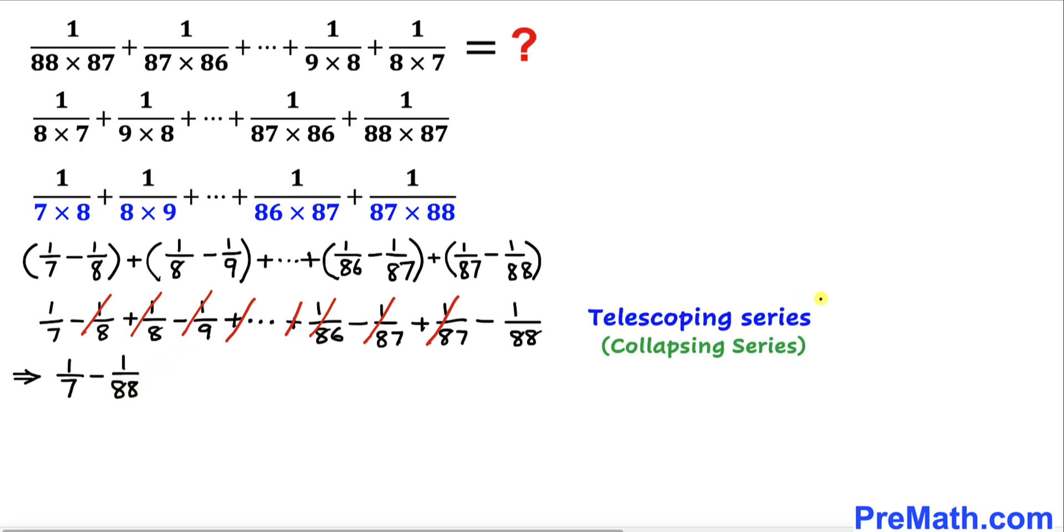Now let's subtract these two fractions by the crisscross method. Cross multiply: 1 times 88 is 88, minus 7 times 1 is 7, divided by the product of the denominators, which is 7 times 88.